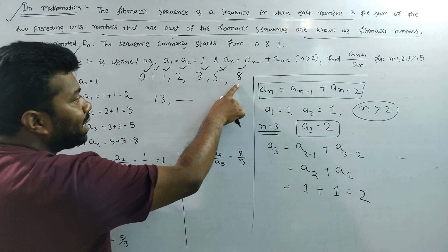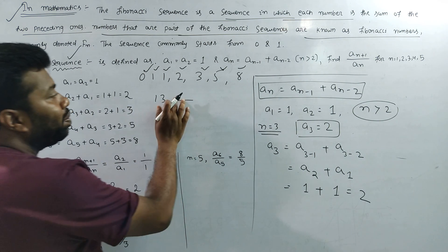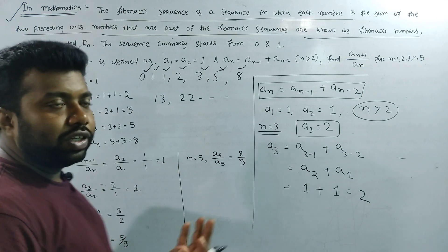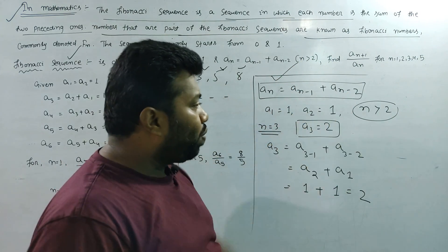The numbers are: 0 plus 1 equals 1, 1 plus 1 equals 2, 1 plus 2 equals 3, 2 plus 3 equals 5, 3 plus 5 equals 8. The sequence is An equals An minus 1 plus An minus 2, where A1 equals 1, A2 equals 1.